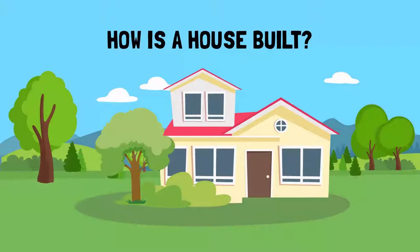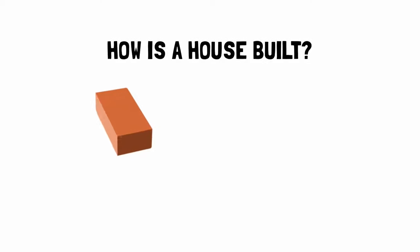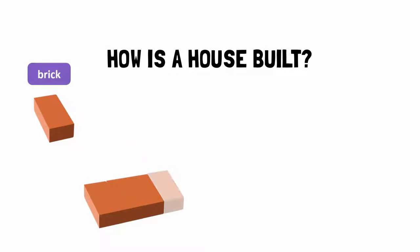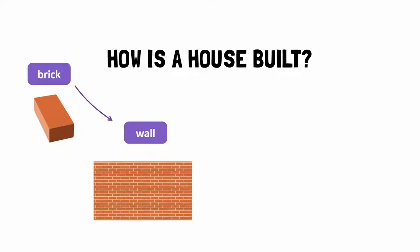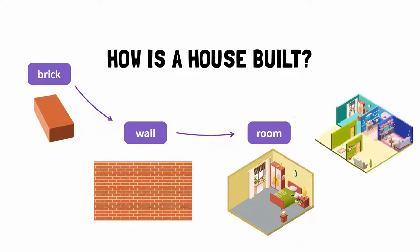Can you recall how a house is built? A brick is the building block of a house. Bricks are put together to make a wall. We put these walls together to form a compartment or a room, and rooms combine to make a house or a building.